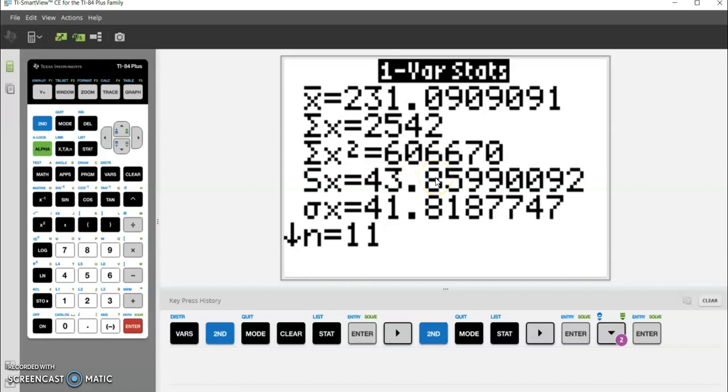This one down here with the funny-looking sigma, that's the population one. We don't want the population one since we didn't have the full population, we have a sample. So you want this sx. This 43.9 is your sample standard deviation. The sigma x down here wouldn't apply to this, but it always gives you both.